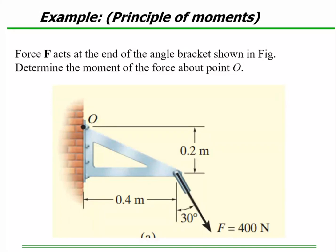So what we've got here is that the force fx at the end of the angle bracket shown here, this is your angle bracket which is fastened to the wall here. Determine the moment of the force about point O. That's my point O. I need to find moment with respect to this point O caused by this force.